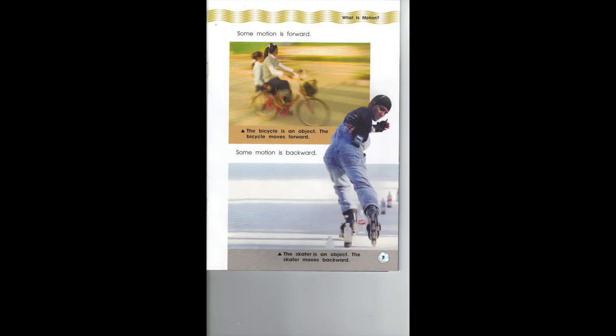Some motion is forward. The bicycle is an object — the bicycle moves forward. Some motion is backward. The skater is an object — the skater moves backward.